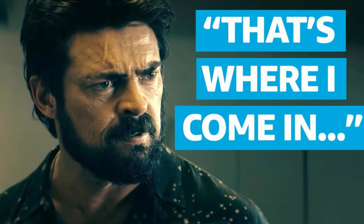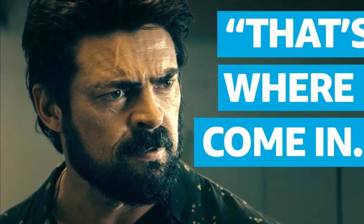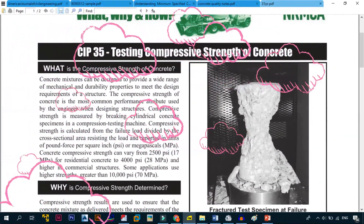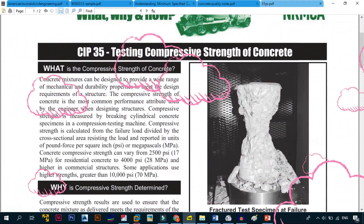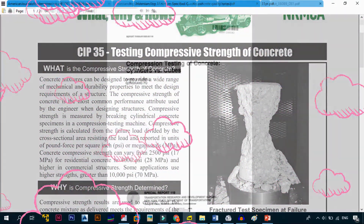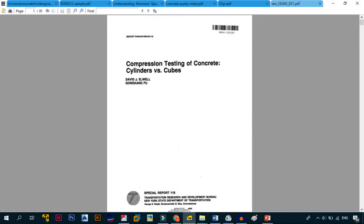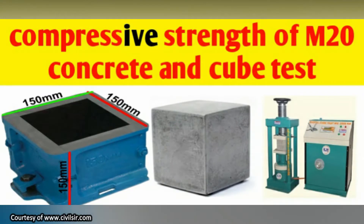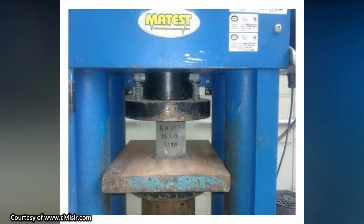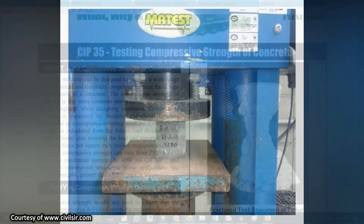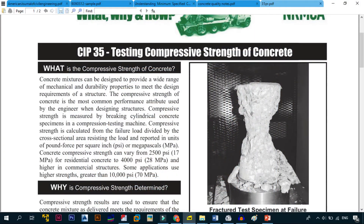To understand this, you first need to know about the compressive strength test of concrete, which is carried out in one of two ways. Method one involves a 15 cm × 15 cm × 15 cm concrete cube cast from the proposed mixture you intend to use for a project. They crush this cube and note the strength needed to break it. For a detailed description of this test, I've left a link in the description.